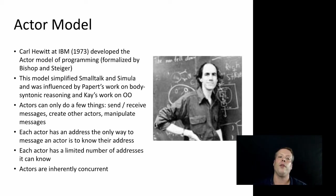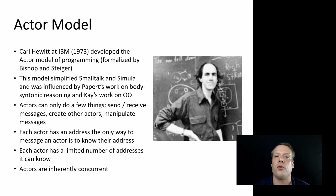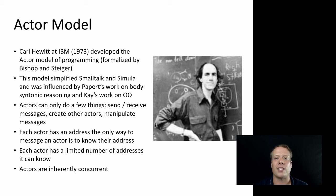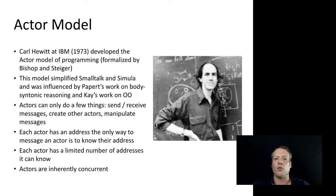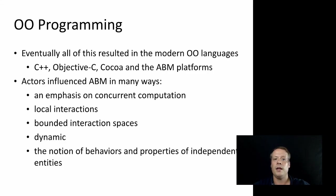Actors can only do a few simple things: send and receive messages, create other actors, and manipulate those messages. Moreover, each actor had an address, and the only way you could send a message to an actor was if you knew their address. He also put a limitation on the number of addresses an individual actor could know — so it had a form of bounded rationality or limited competency. This enforced things like local reasoning and inherent concurrency, because actors had no knowledge of what their neighbors were doing until they sent or received messages from them.